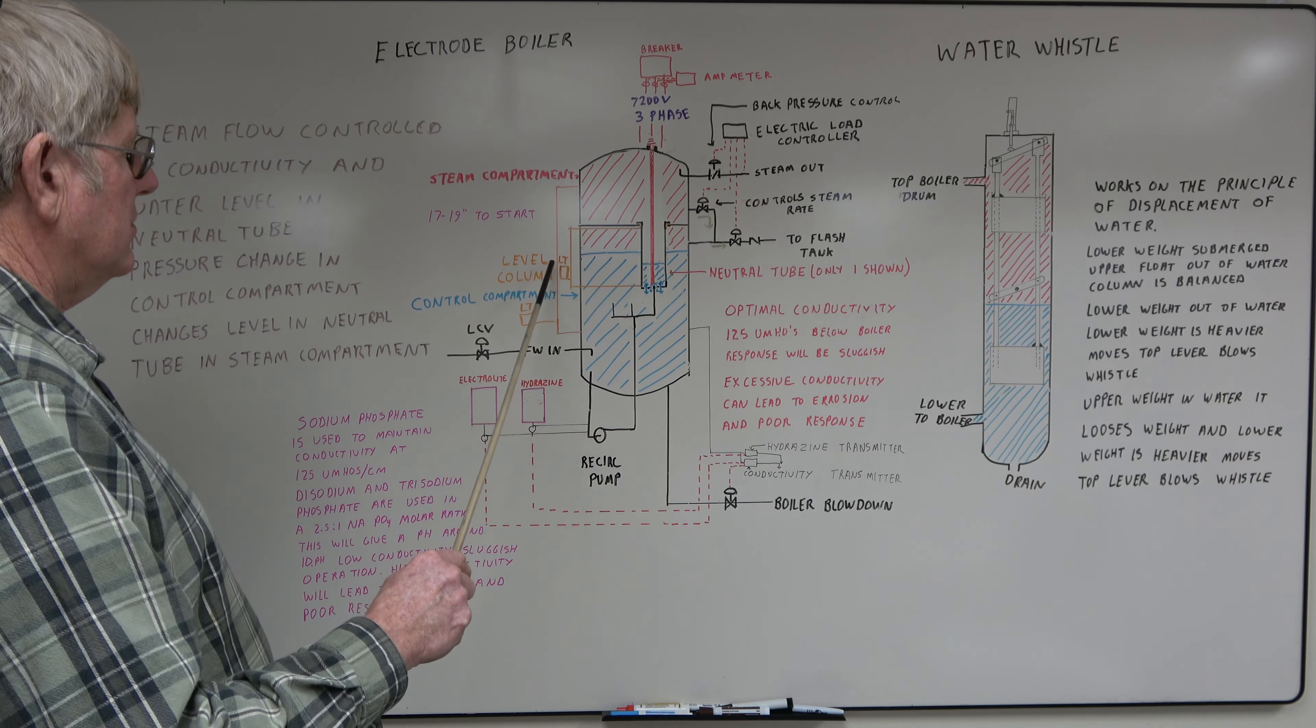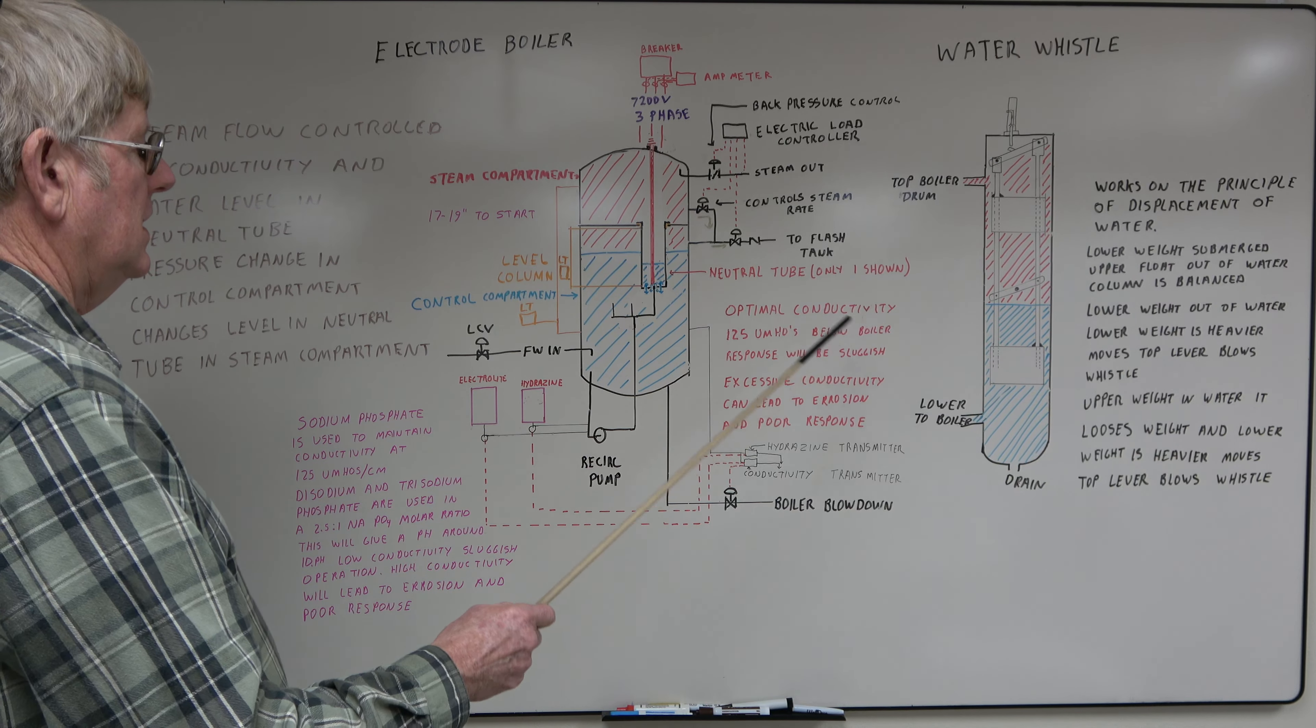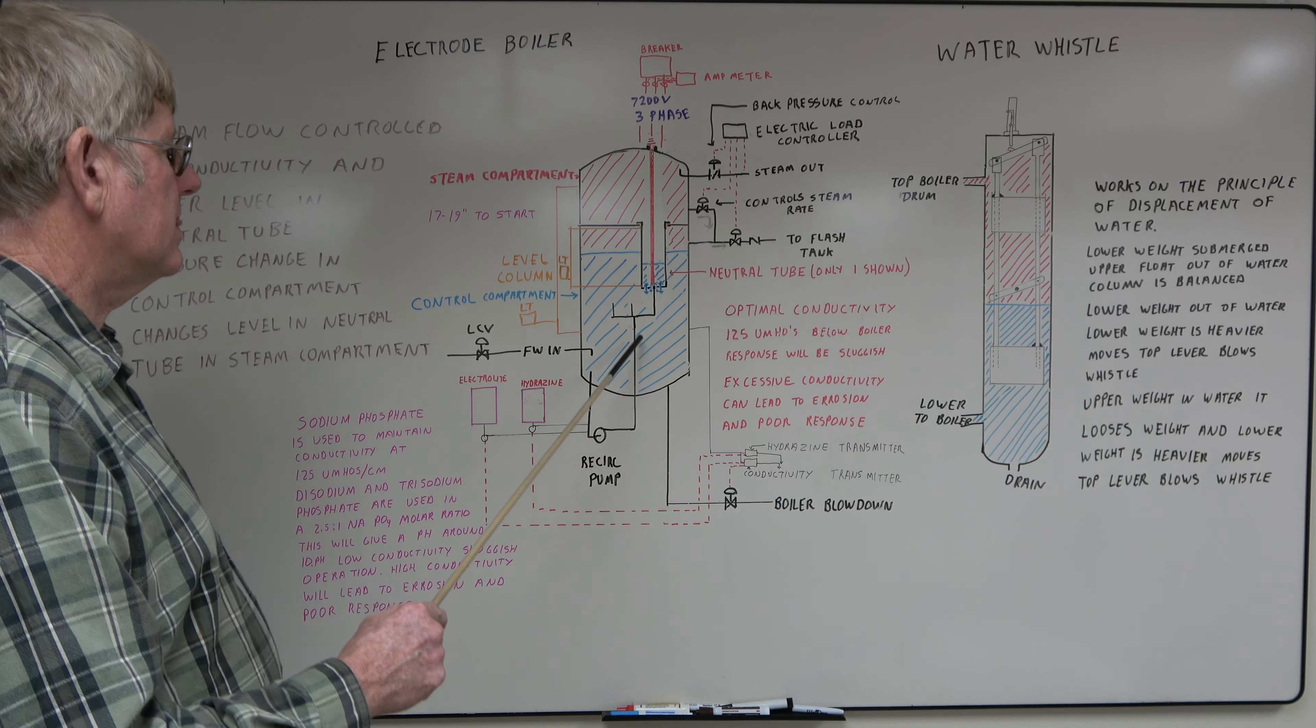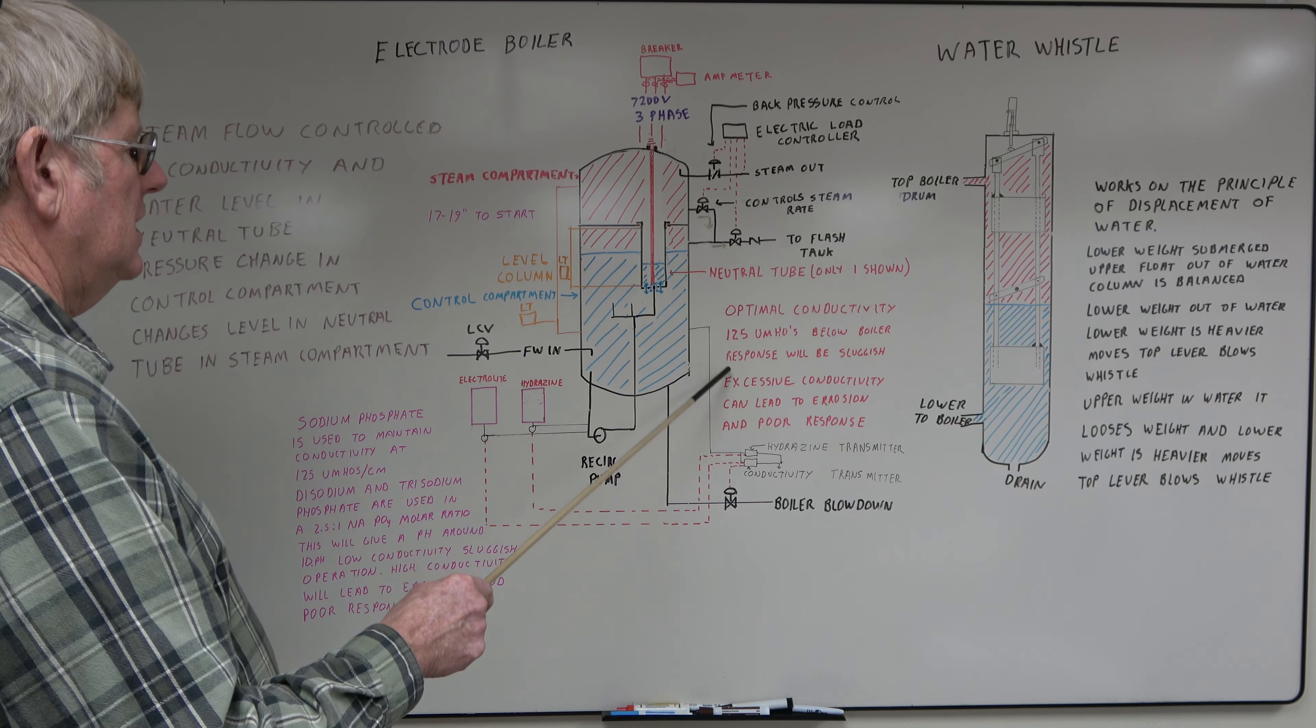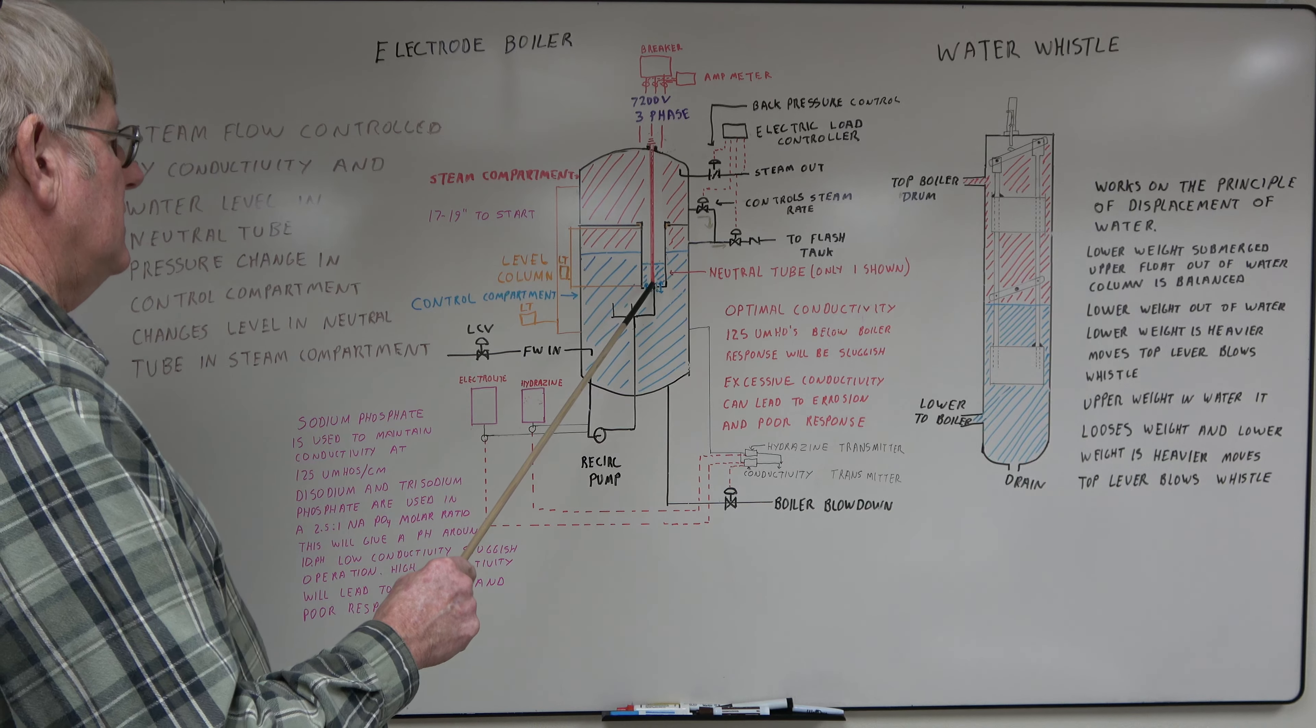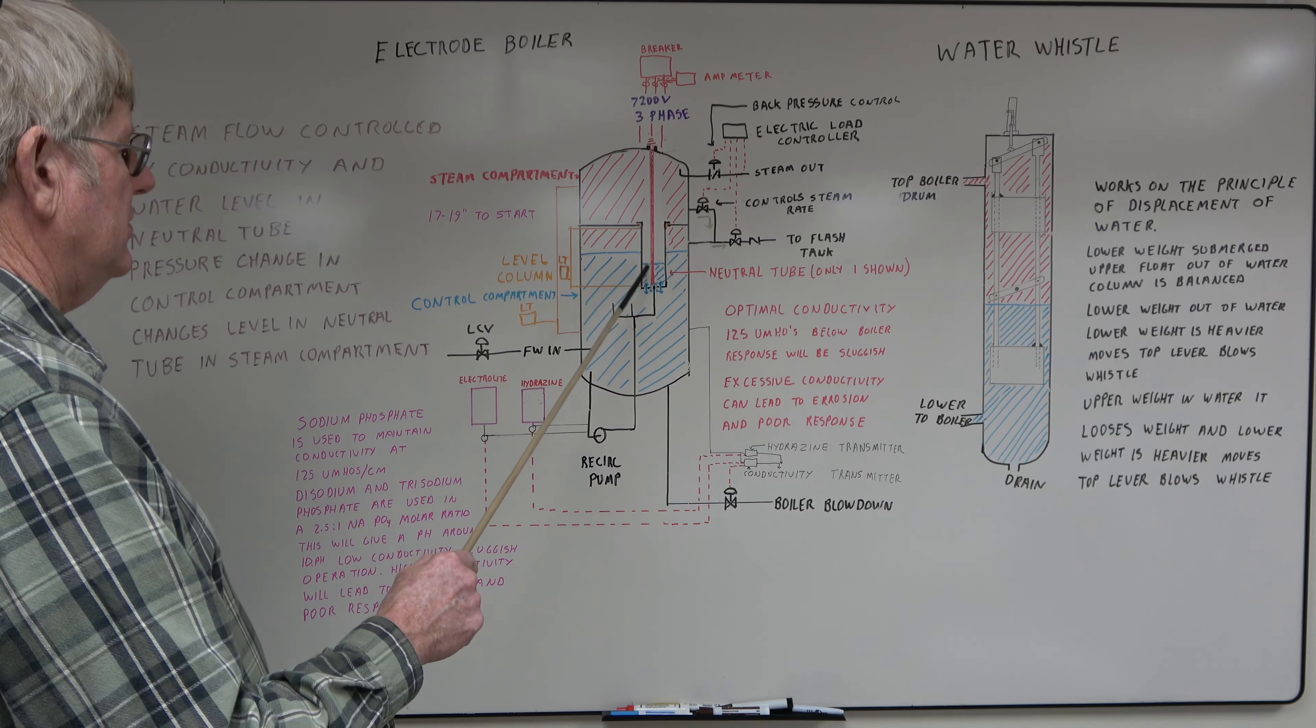The optimal conductivity is 125 micromhos. If you do not have enough conductivity, your boiler response will be sluggish. The conductivity is too low and the current won't flow across here. If you have too high of conductivity, you have to maintain a little water level to have poor response and you have erosion.